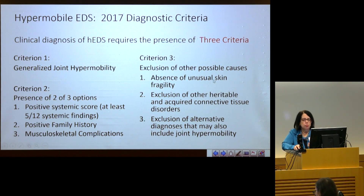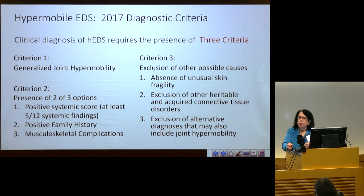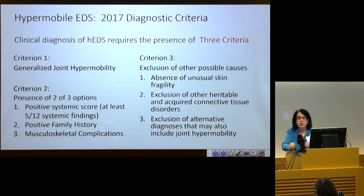Criteria three is our exclusionary criteria — we want to make sure we've considered a full and complete differential diagnosis. This means ensuring there is no unusual skin fragility pointing to classical or rarer EDS types, excluding other heritable and acquired connective tissue disorders, and excluding alternative diagnoses that may also include joint hypermobility, such as some of the myopathies.